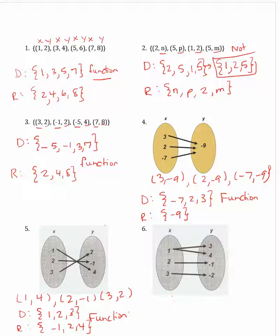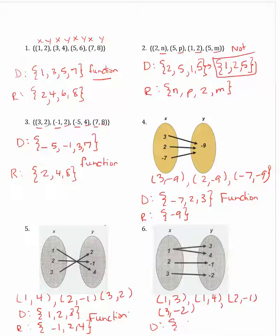Example 6 is also a mapping, and the ordered pairs represented are (1, 3), (1, 4), (2, negative 1), and (3, negative 2). So the domain of the function is 1, 2, 3. And the range of the function is negative 2, negative 1, 3, 4. Now this is not a function because the ordered pairs repeat the x-coordinate of 1.